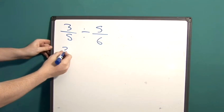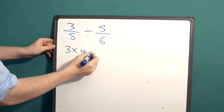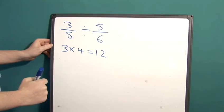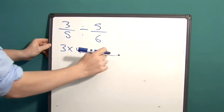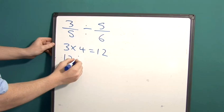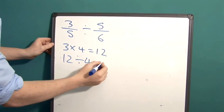Just to show you an example, if we have 3 multiplied by 4, this equals 12. If we then divide 12 by 4, we get back to 3.